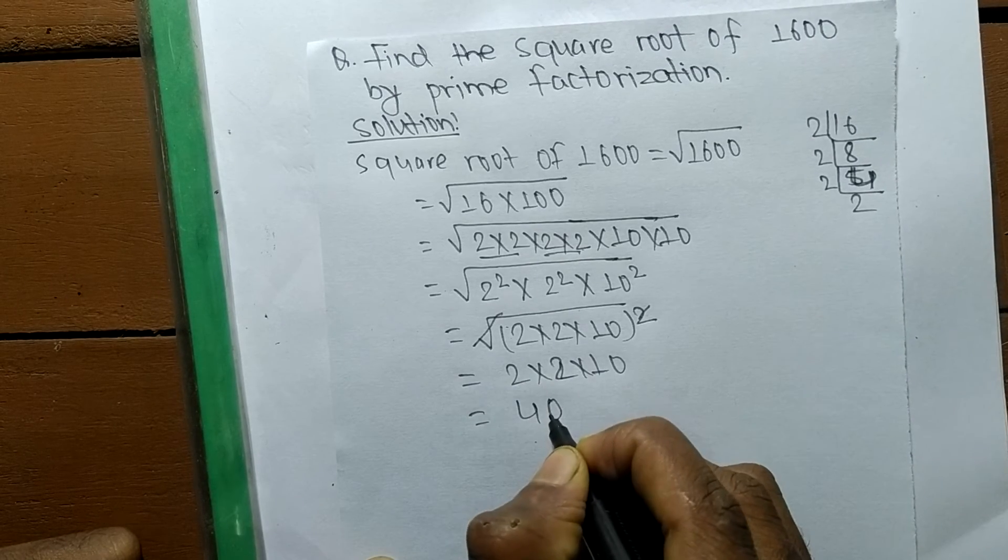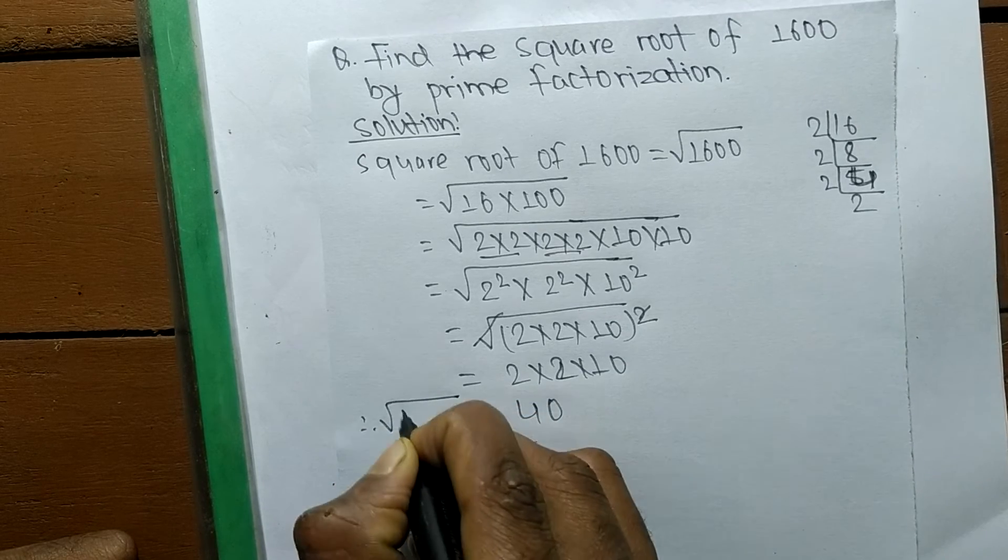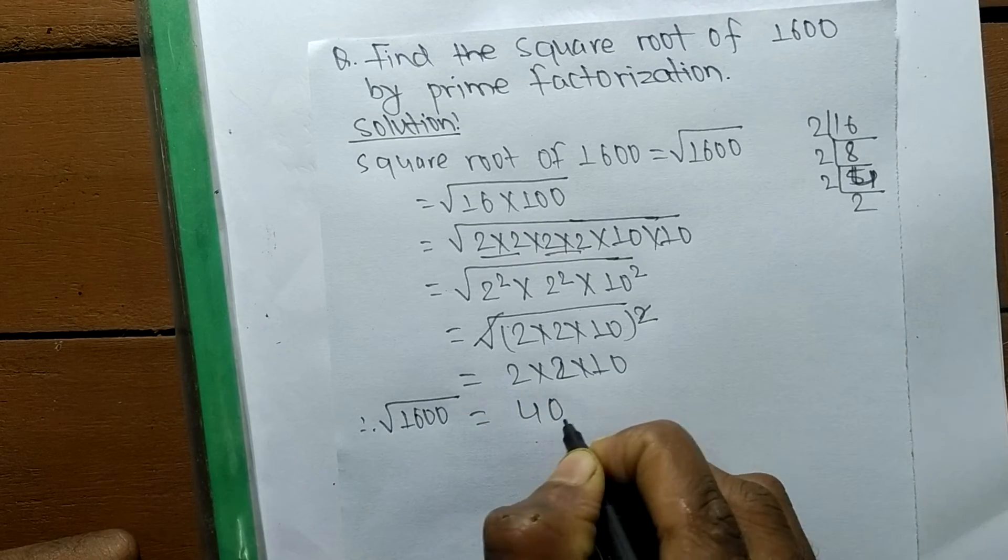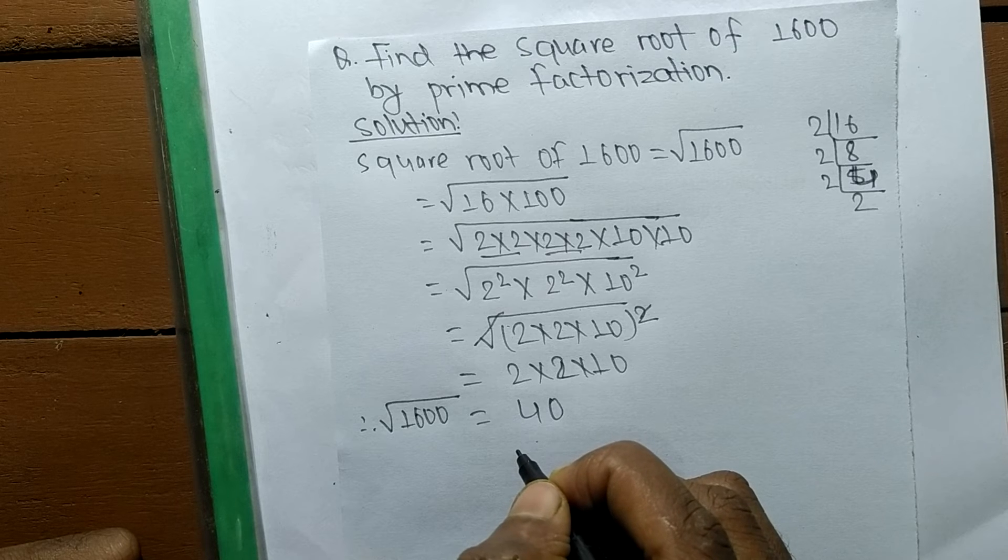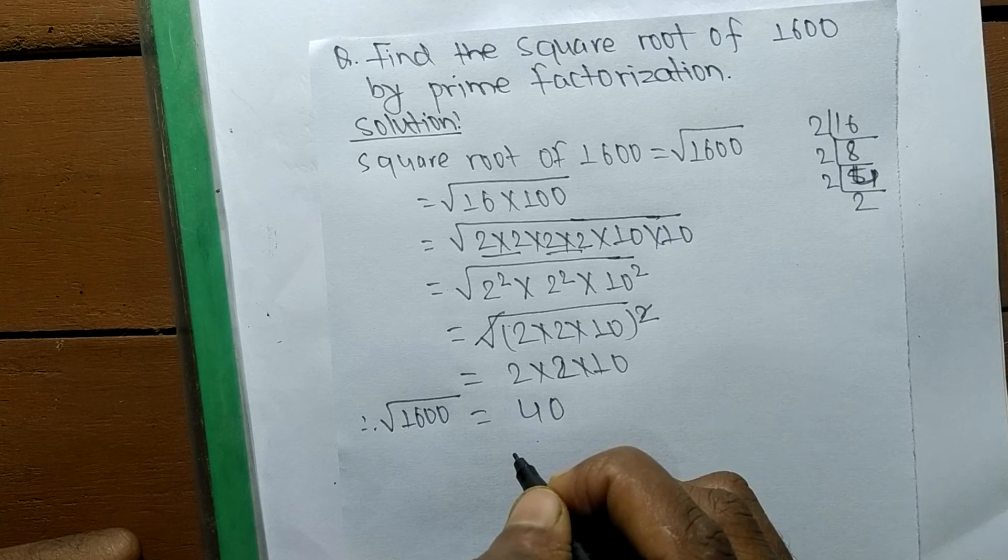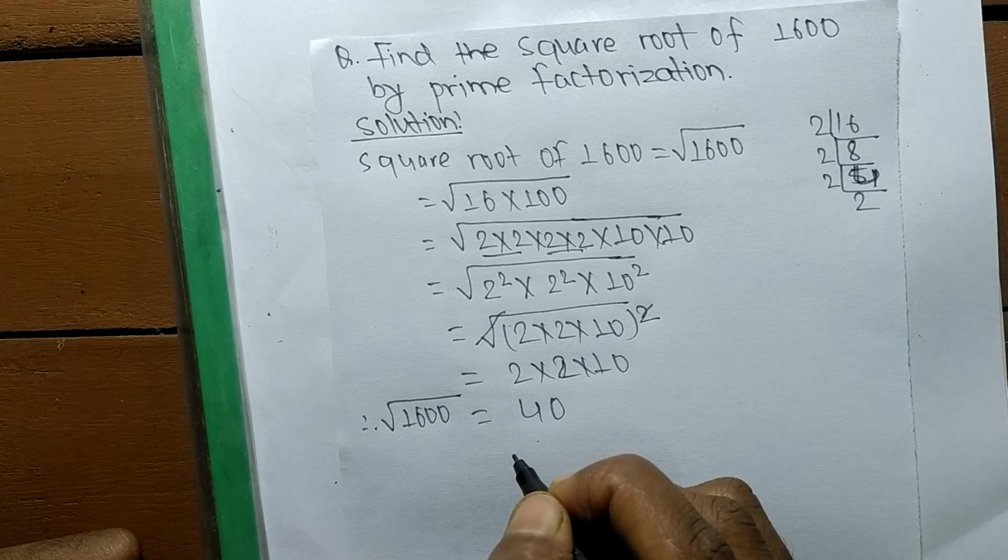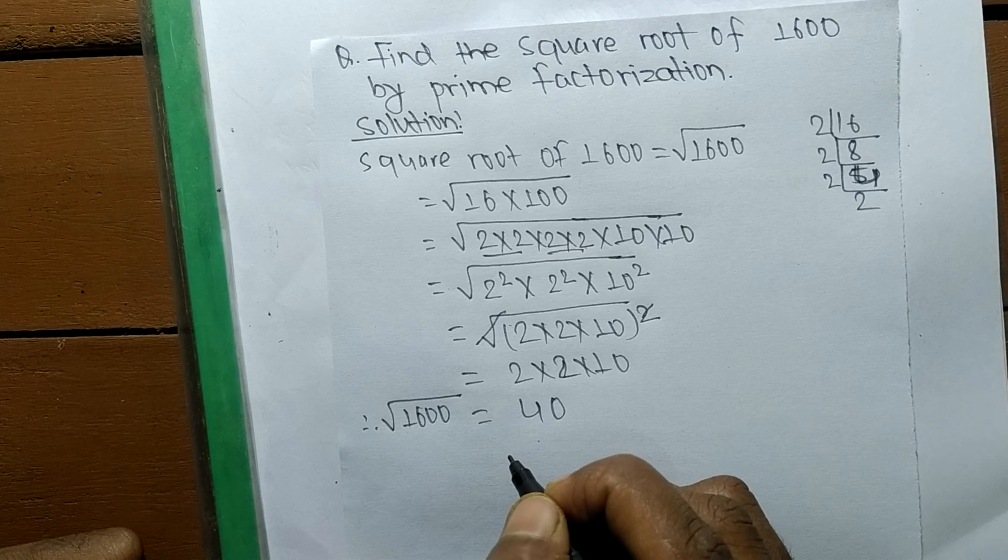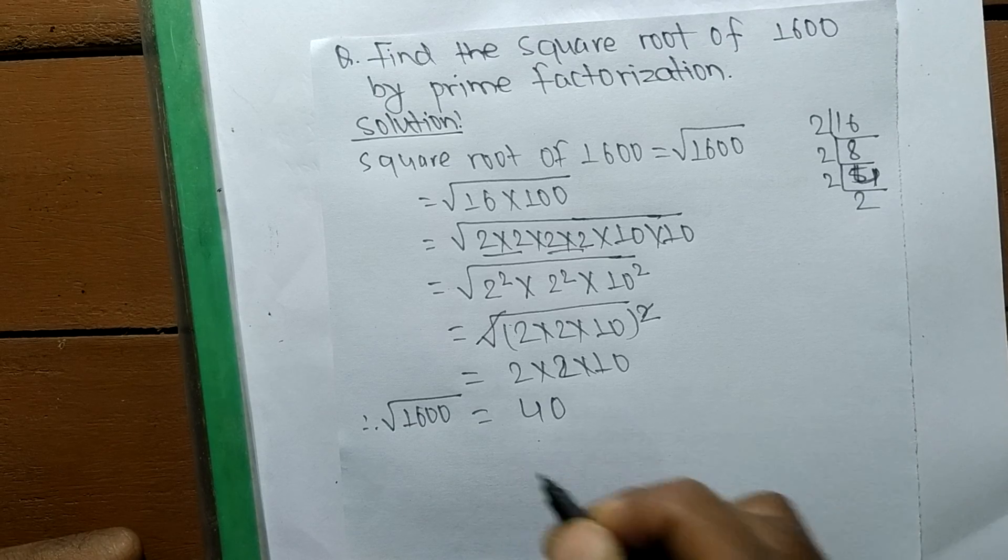The square root of 1600 is 40. If you have any questions related to math and science, just comment your question below and we shall provide a video solution. Thank you.